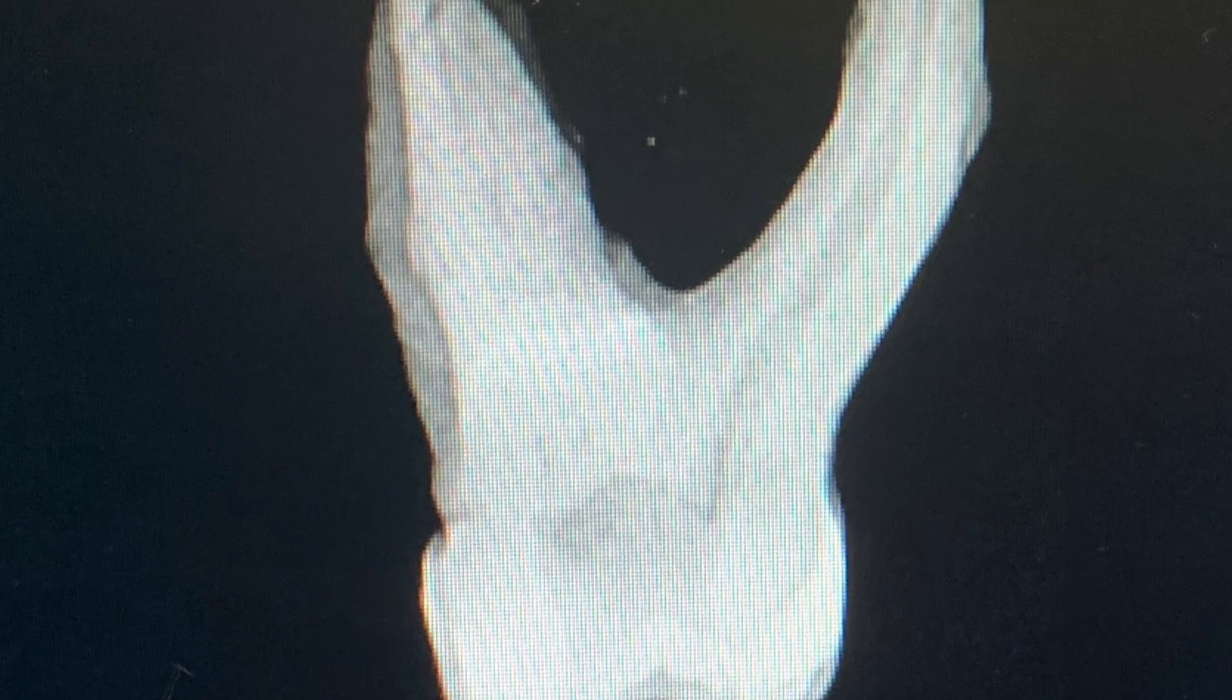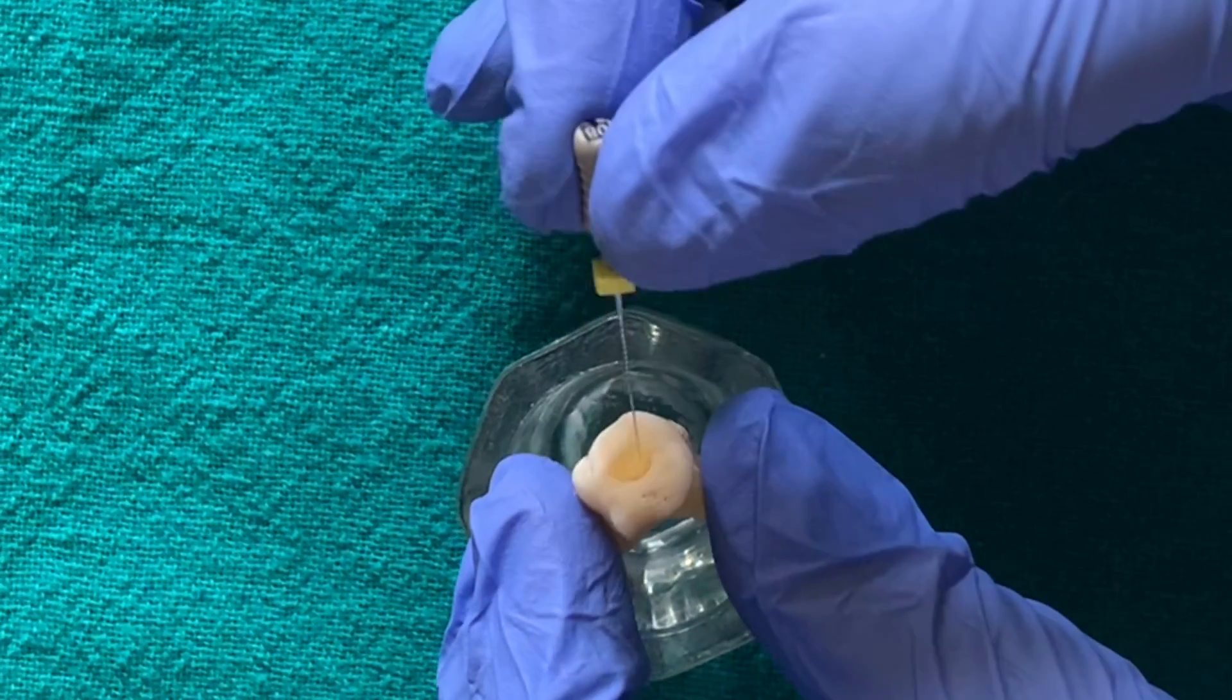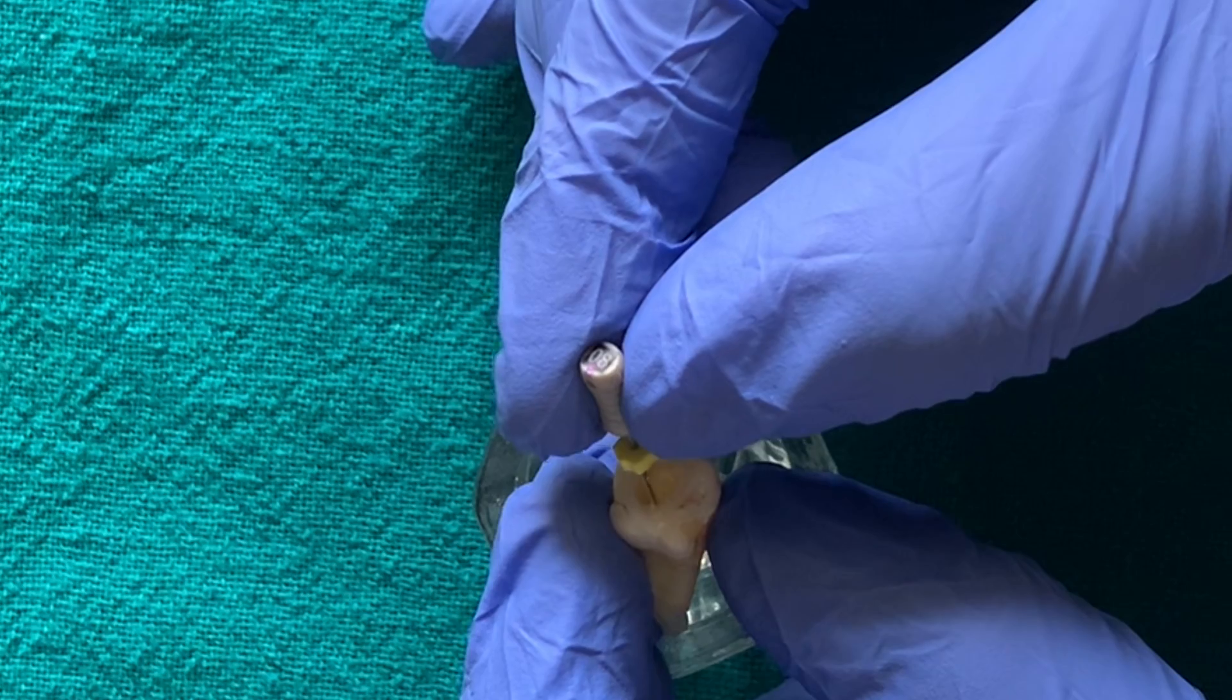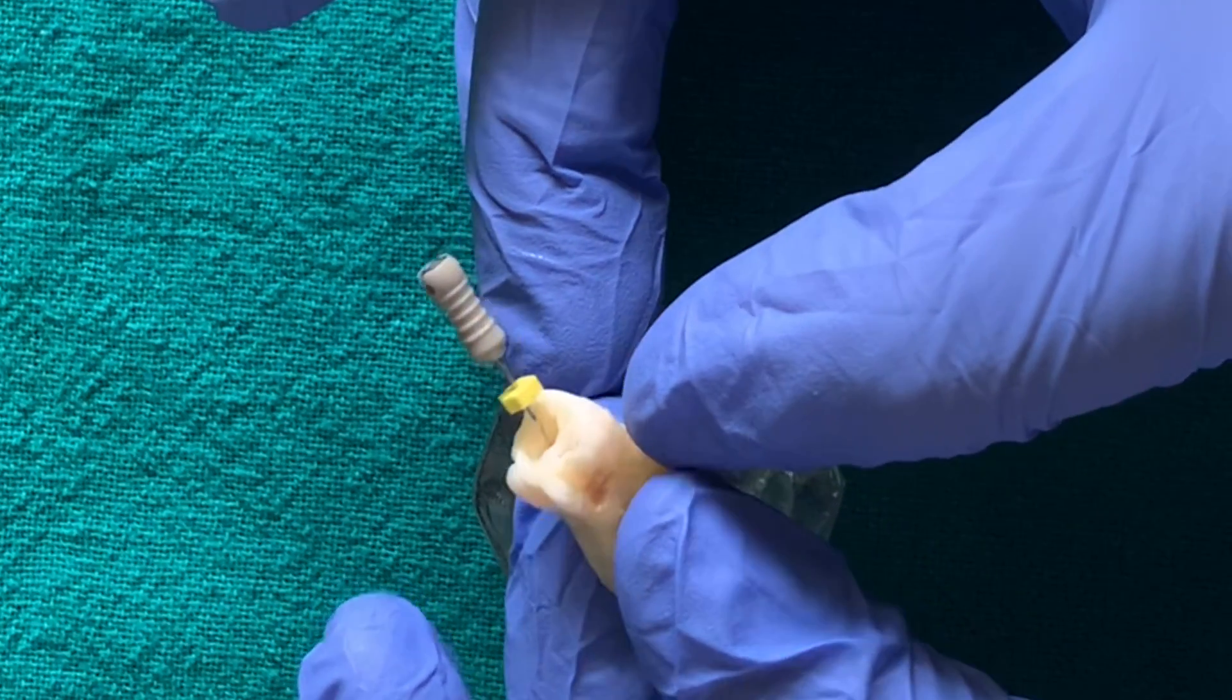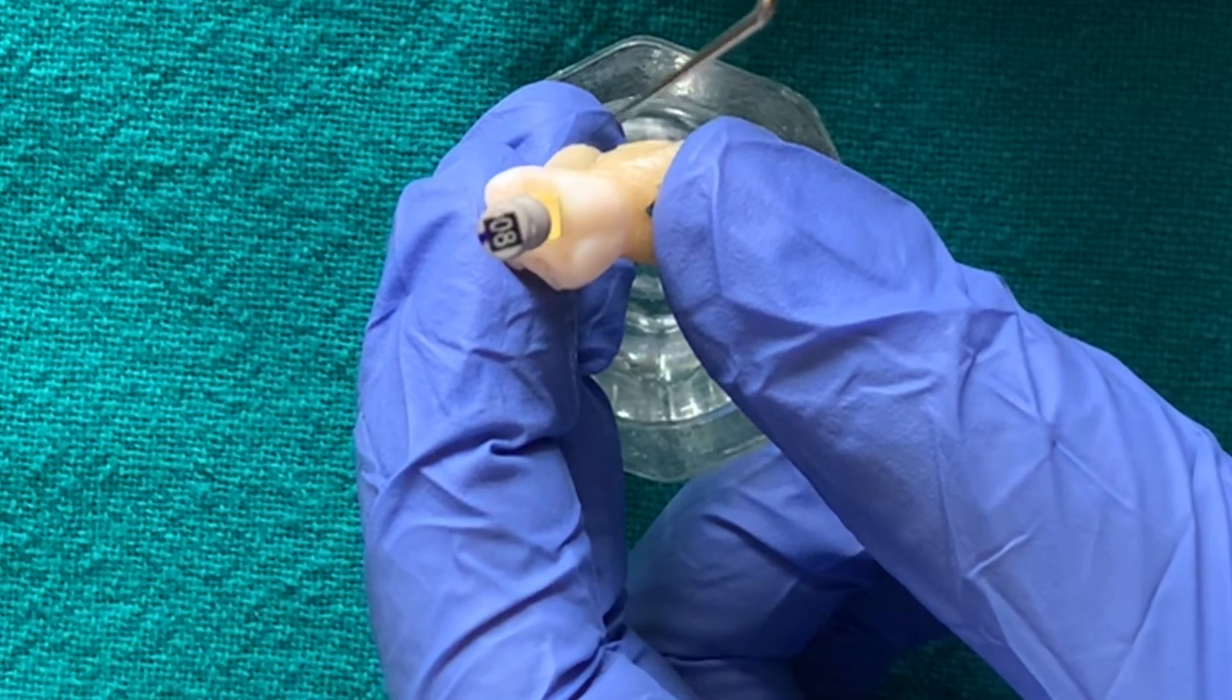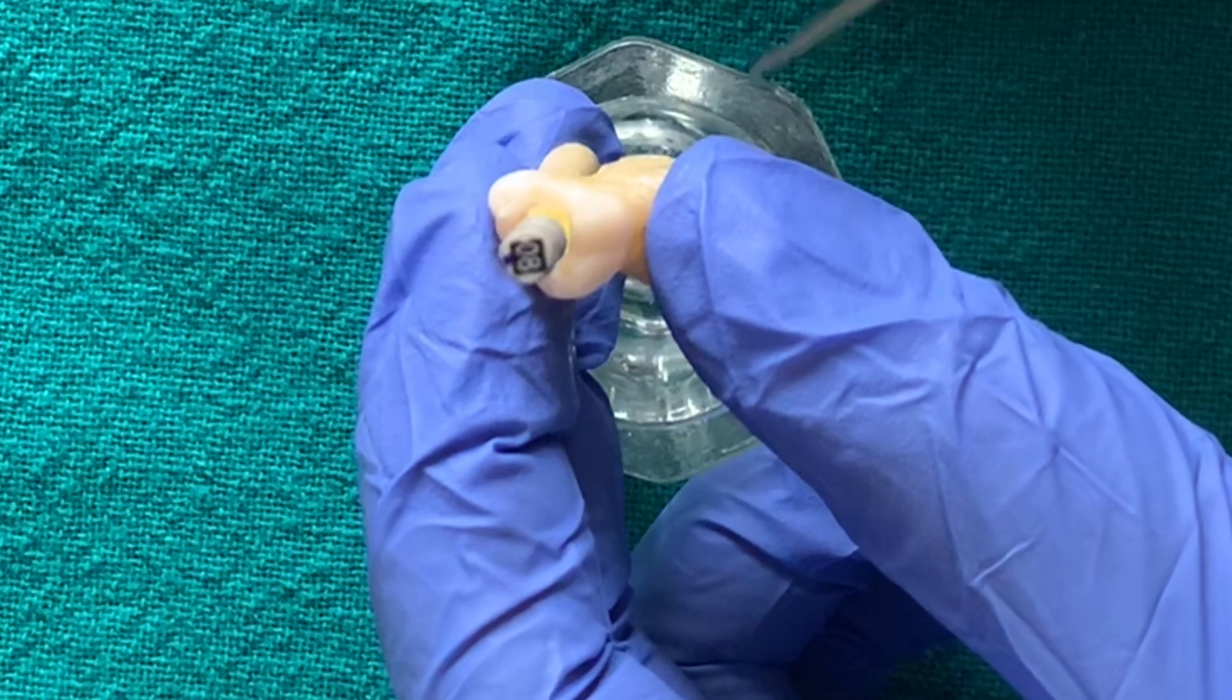Let me show you these motions in a curved molar root canal. I've taken an eight number file and I've inserted it to the point of maximum insertion. On this file I have put a mark which we are going to use as a reference point.